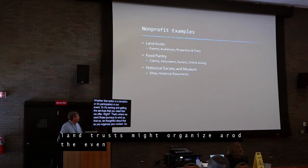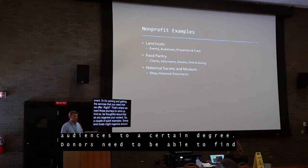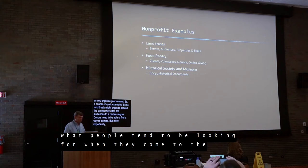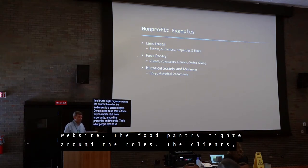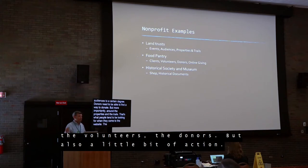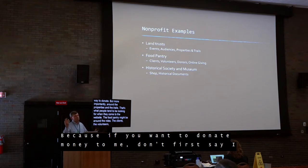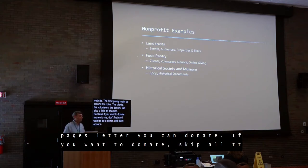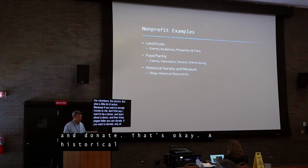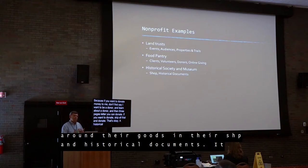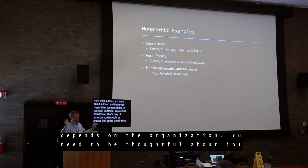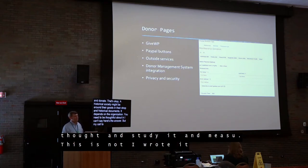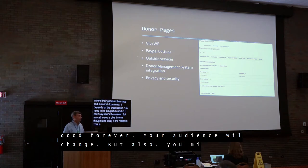Some land trusts might organize around the events they offer and the properties and trails — that's what people tend to be looking for when they come. Whereas the food pantry might organize around roles: clients, volunteers, donors. But also a little bit by action — if you want to donate money right now, I don't want you to first click 'I'm a donor,' learn about being a donor, and three pages later get the opportunity to donate. If you already know you want to donate, skip all that and click the button. A historical society might organize around goods in their shop and historical documents. It really depends on the organization — give it thought, study it, and then measure. It's a never-ending journey. Your audience will change, and you might not have gotten it perfect on the first try.